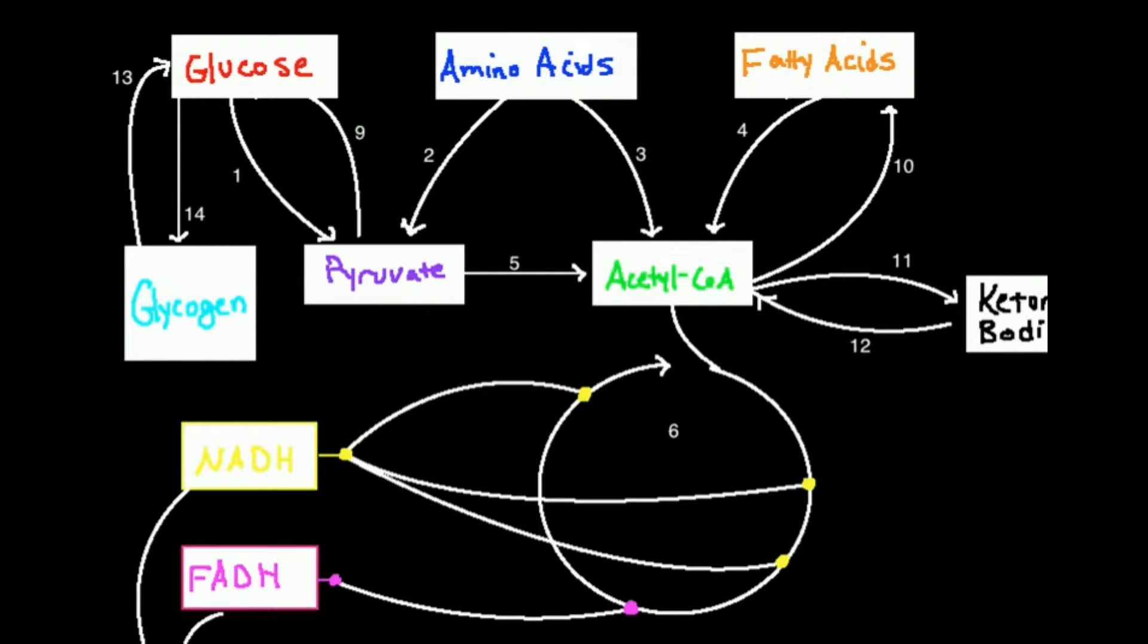So if I start with glycogen, I can turn glycogen into glucose. So number 13 right here, turning glycogen into glucose, that process right here is called glycogenolysis. Glycogenolysis, meaning the lysing glycogen, cleaving apart the units of glycogen to make glucose.